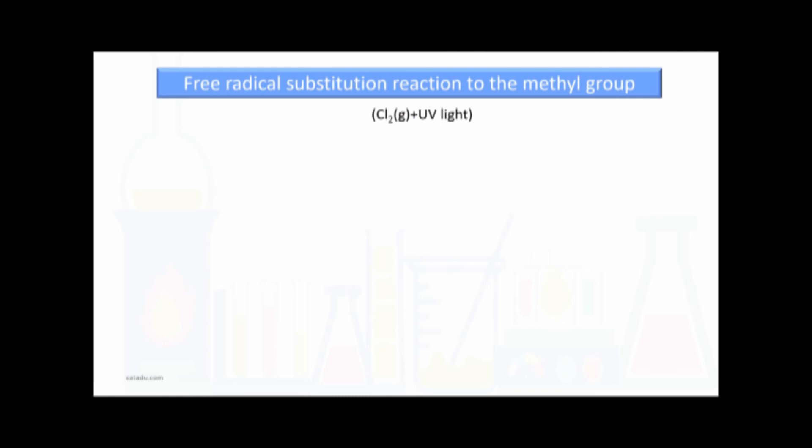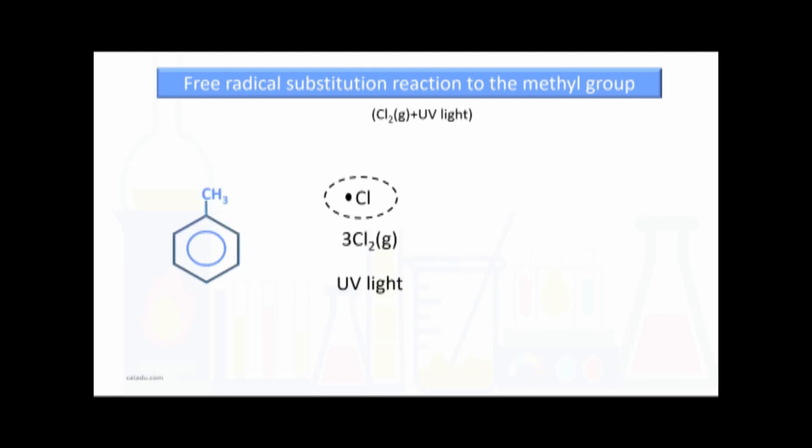The free radical substitution reaction in the side chain: this is similar to the free radical substitution reaction of alkanes. The reagent is chlorine gas and UV light is the condition. Under these conditions, chlorine free radicals are produced and replace hydrogens from the methyl group. All three hydrogens are replaced, giving the final product trichloromethylbenzene and HCl.